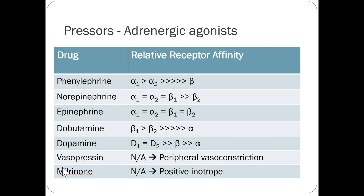Epinephrine is not routinely used as a sustained drip. It's more of an ACLS medication for acute situations. EMS may start an epi drip in the field, but we almost always convert off it quickly because outcomes with long-term epi use are poor. The problem is it has so much cardiac activity — aggressively stimulating the heart for a long period in an already critical patient is unsustainable.